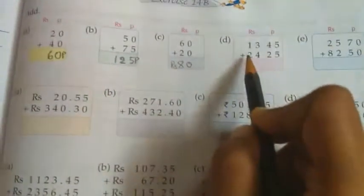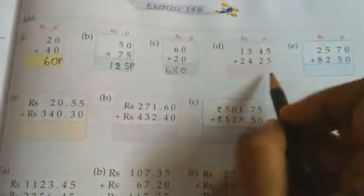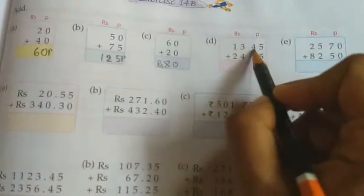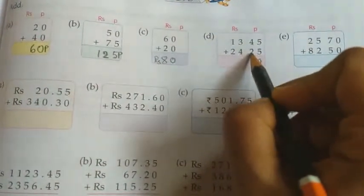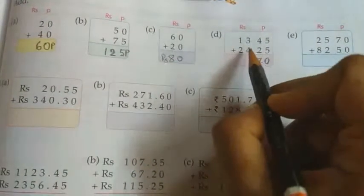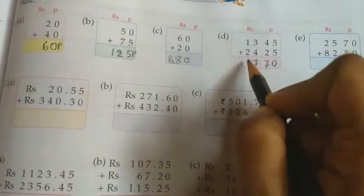Here rupees and paise given, 13 rupees 45 paise plus 24 rupees 25 paise. We will calculate paise first: 5 plus 5 equals 10, write 0 and carry 1. Then 1 plus 4 equals 5, plus 2 equals 7, so 70 paise. For rupees, 3 plus 4 equals 7, and 2 plus 1 equals 3, so 37 rupees 70 paise.